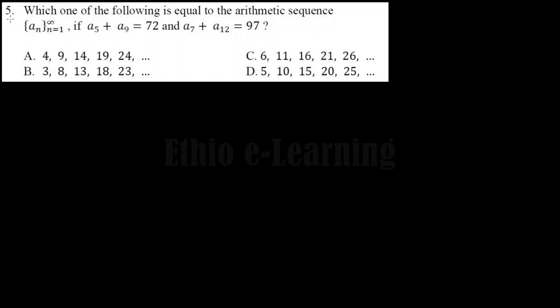Which one of the following is equal to the arithmetic sequence a subscript n, from n equals 1 to infinity, if a₅ plus a₉ is equal to 72, and a₇ plus a₁₂ is equal to 97? We have the arithmetic sequence a subscript n where n goes to infinity.